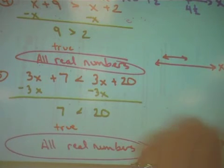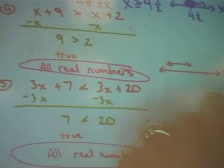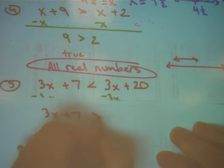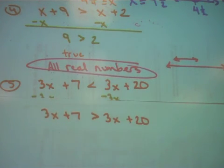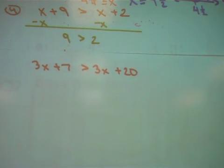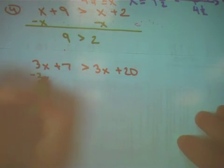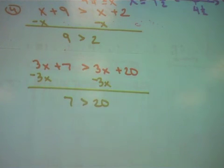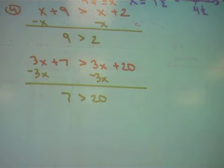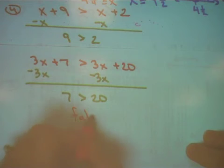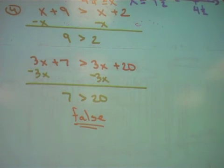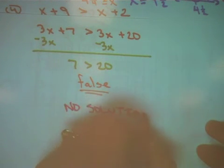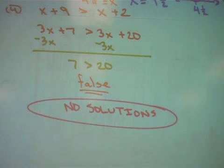Now, what if, for example, instead of this, the equation said 3x plus 7 is greater than 3x plus 20. Well, let's do that math and see what happens. I'm going to subtract 3x from both sides, and now 7 is greater than 20. Is 7 greater than 20? No. That statement is false. That's not true. So what we say is, there are no solutions. And therefore, there's nothing to graph. You're done.